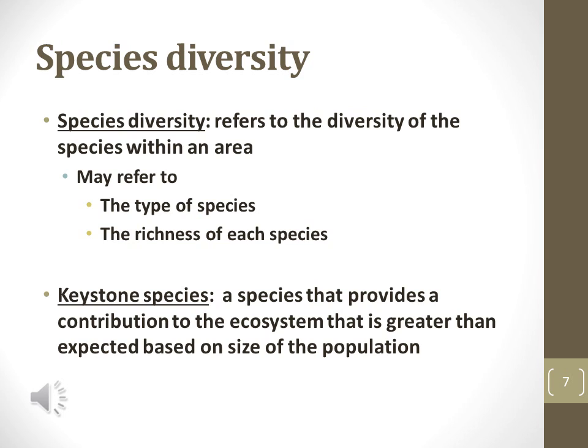Species diversity refers to the genetic or morphological diversity of a species in an ecosystem. Population diversity is the diversity among a single species, while community diversity refers to the number of species present.